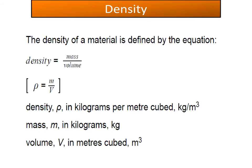The first thing we look at in this topic is density, and the density of a material is defined by the equation: density equals mass divided by volume. Density has the symbol rho, mass has the symbol m, and volume has the symbol capital V. Density is measured in kilograms per metre cubed, kg/m³.